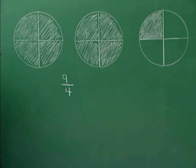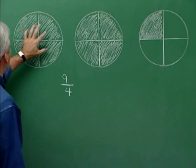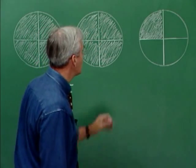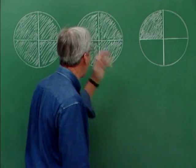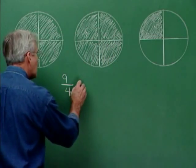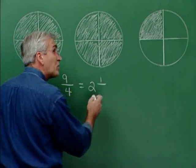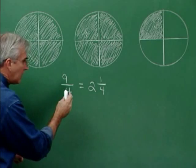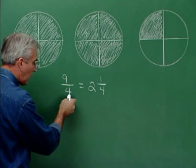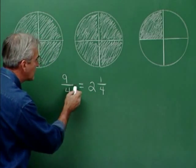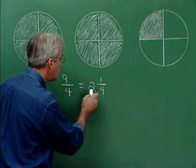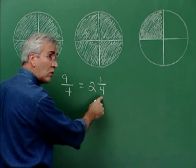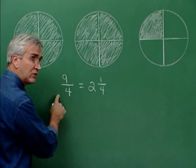Now let's look at the same situation another way. We have one whole circle shaded here, one whole circle here — that's two whole circles — plus one fourth of another circle. So we have two and one-fourth circles shaded. This means that nine-fourths and two and one-fourth have the same value, so there must be a way to convert between them.